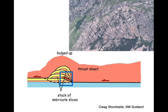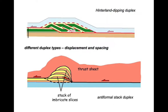Here's an example from the Moine Thrust Belt showing the back rotation of thrust slices — it's the trailing edge of one of these types of thrust systems. This contrasts with the earlier duplex model in which the individual thrusts and the strata they contain generally dip towards the hinterland. So in the top version we have something referred to as a hinterland dipping duplex; in the lower one, we have an anti-formal stack duplex. We generate these different duplex types simply by changing the displacement on the individual imbricate thrusts within the duplex, or by changing the spacing of the individual imbricate thrusts and hence the size of the horses.